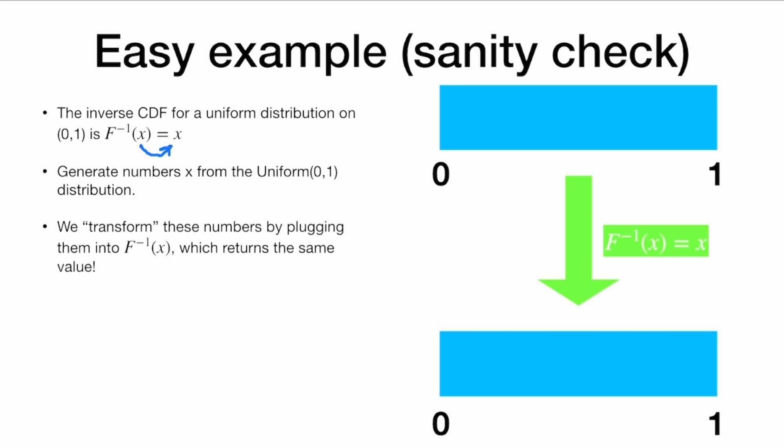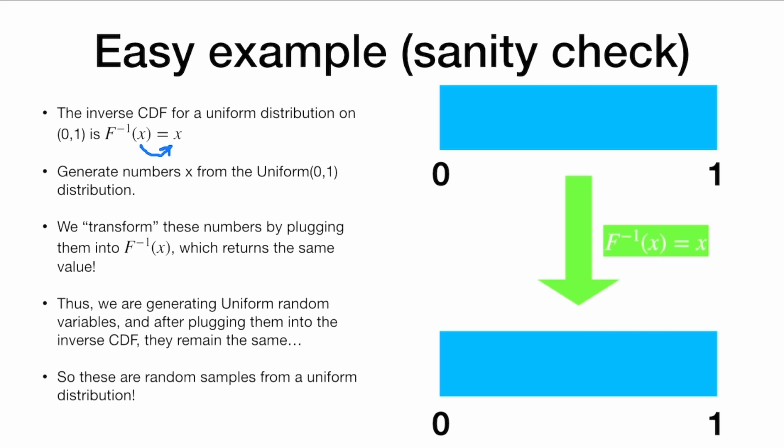And then we will transform these numbers by plugging them into the inverse CDF. Well, it's not really transforming them. It's keeping the number the same. Thus, we are generating uniform random variables, and after plugging them into the inverse CDF, they remain the same. And so these random samples are also from a uniform distribution. So this is one piece of evidence that this method works.